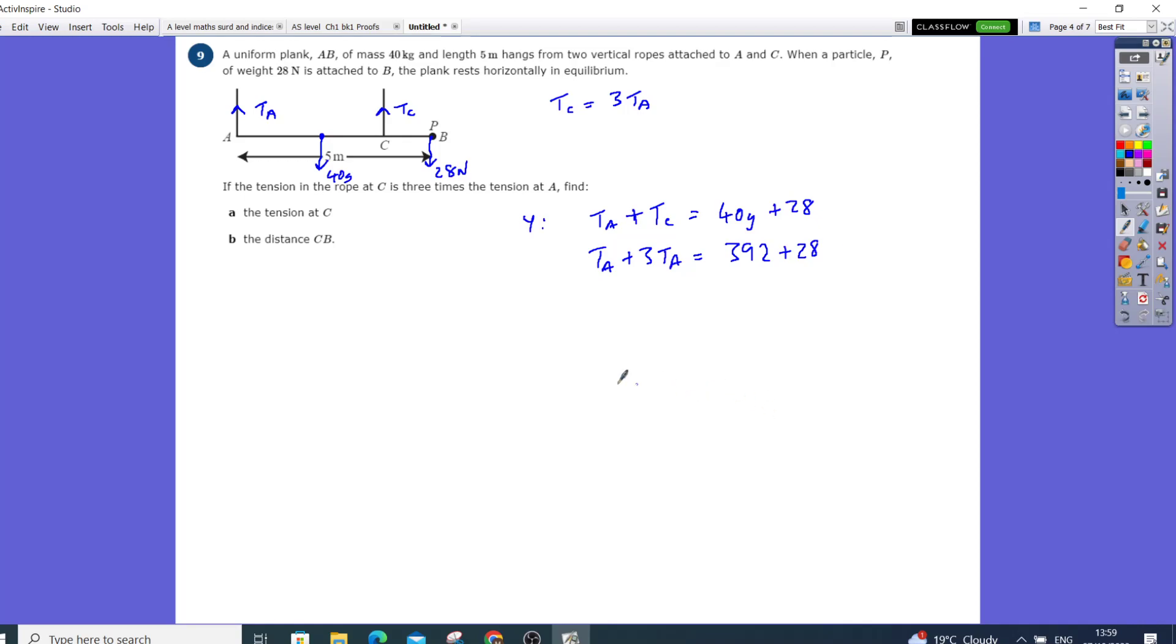So that plus that is going to be 4TA and that's going to be balanced with 420 newtons. And if we divide that by 4 you get TA to be 105 newtons. So first one done, tension at A is 105.